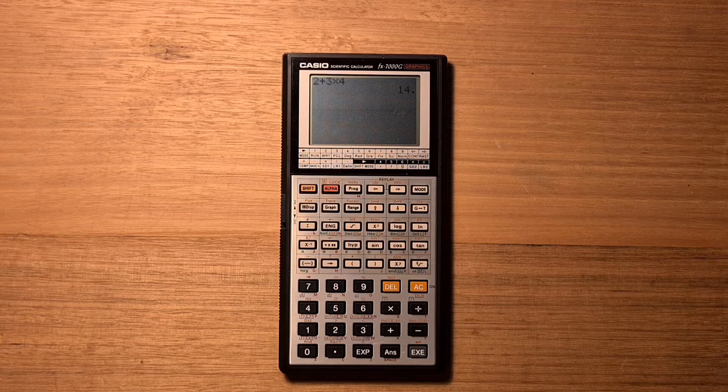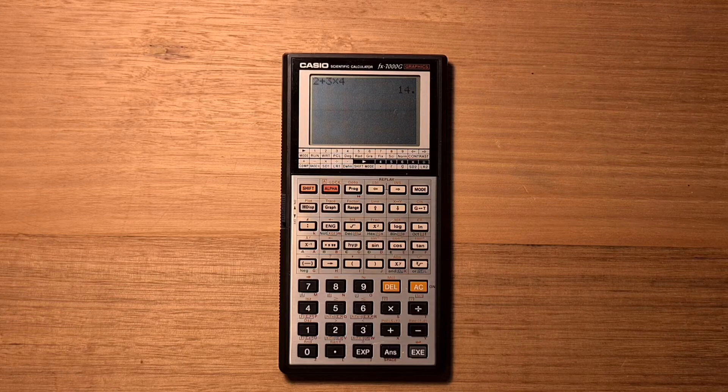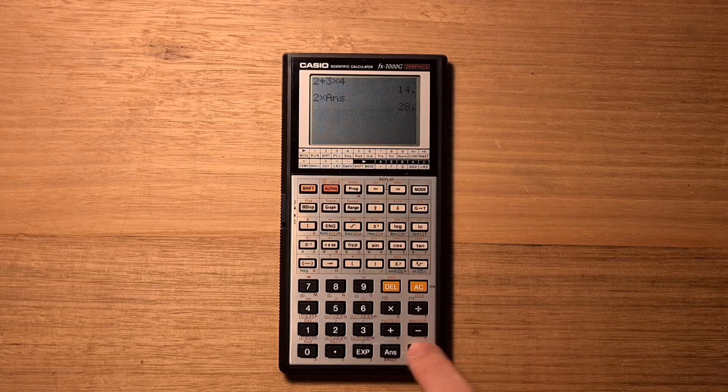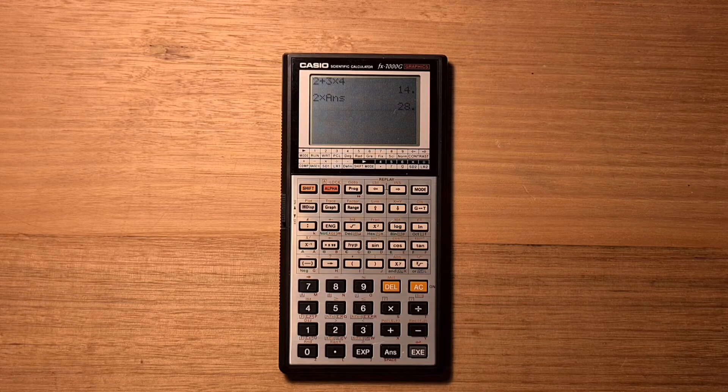Once we have a result we can use the answer key to reference it in another formula. So if I type 2 times answer and then execute, we get the previous result doubled.